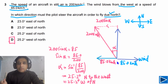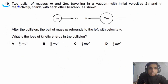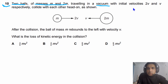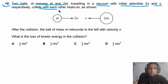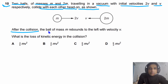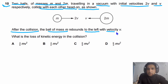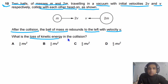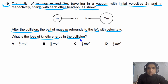I hope this question is clear to you. For question number 10, two balls of masses m and 2m traveling in vacuum with initial velocities 2v and v respectively collide head-on. After the collision, the ball of mass m rebounds to the left with velocity v. We need to find the loss of kinetic energy in the collision.